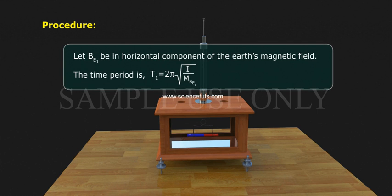Let BE1 be the horizontal component of the Earth's magnetic field. The time period T1 is equal to 2 pi square root of I by MBE1.